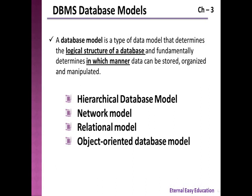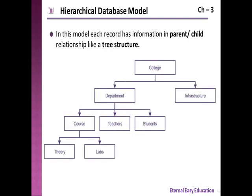In your book you have four types of database models: hierarchical database model, network database model, relational database model, and object-oriented database model. Let's see them one by one. The first one is the hierarchical database model. In this model, each record has information in a parent-child relationship, like a tree structure.